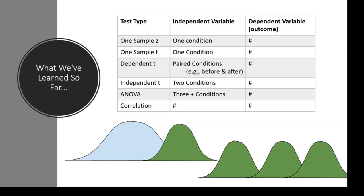Because we're no longer putting people into groups, we no longer have the ability to randomly assign them to groups. I can't randomly assign you to height. That leads to a very important point about correlation: just like the null hypothesis is no difference, you should also remember that correlation does not equal causation. This is something you'll really want to have as a mantra. I have a whole separate video on understanding that when we do a correlation, we have no idea what the causal forces are.